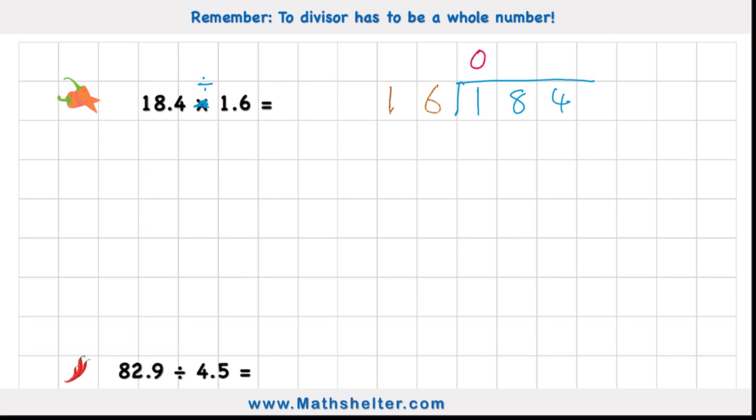How many 16s in 1? Well, there's 0. And 0 times 16 is 0. 1 subtract my 0 is 1. Bring down my 8. 18. How many 16s are there in 18? There's 1. How many did we just take away? Let's check by doing 1 times 16 is 16. That leaves me with 2. And then when I bring down my 4, I have 24.